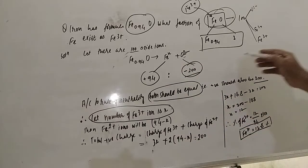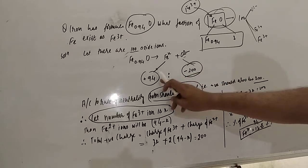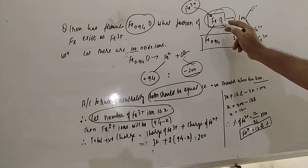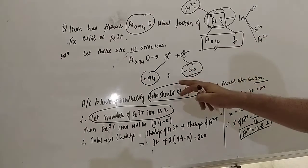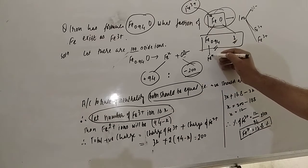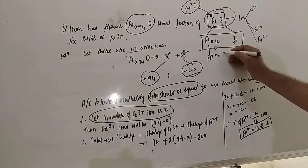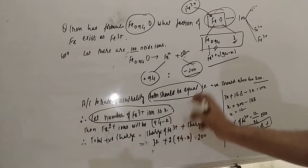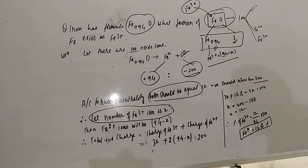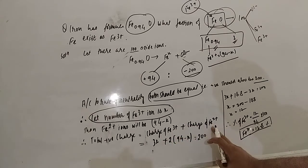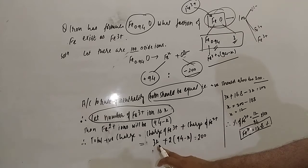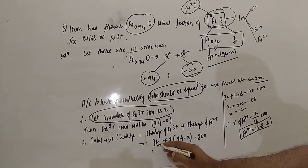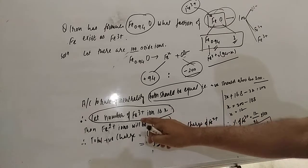We consider Fe³⁺ ions as X. The negative charge is 200, so the positive must also be 200. Fe³⁺ is X, so Fe²⁺ will be 94 minus X, since the total Fe is 94. Total positive charge equals charge from Fe³⁺ plus charge from Fe²⁺, which is 3 times X plus 2 times (94 minus X) equals 200.